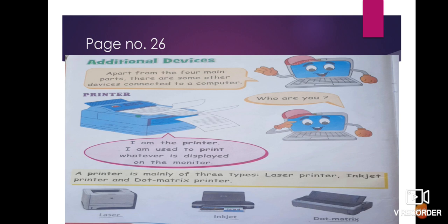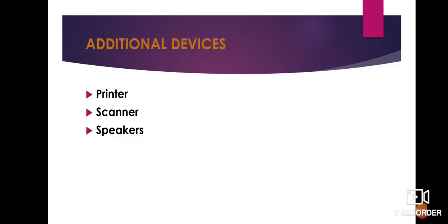We attach them to a computer only if we need them. Because we are adding some parts when required, that is why they are known as additional devices. There are three additional devices: printer, scanner, and speakers.